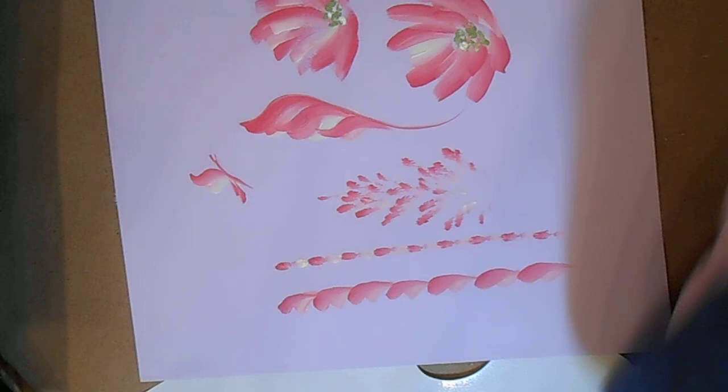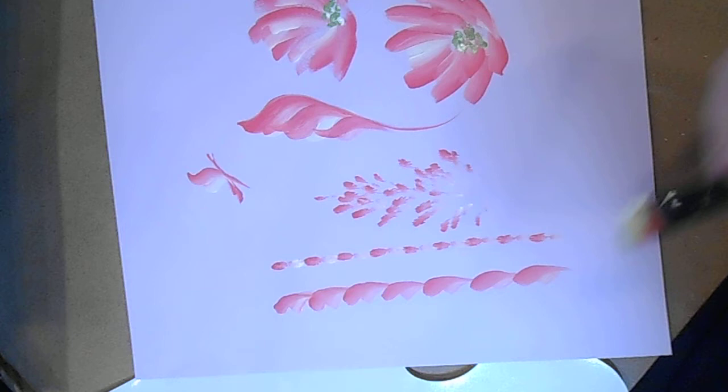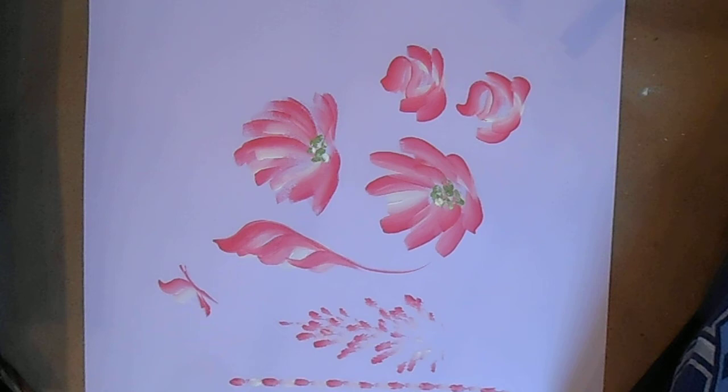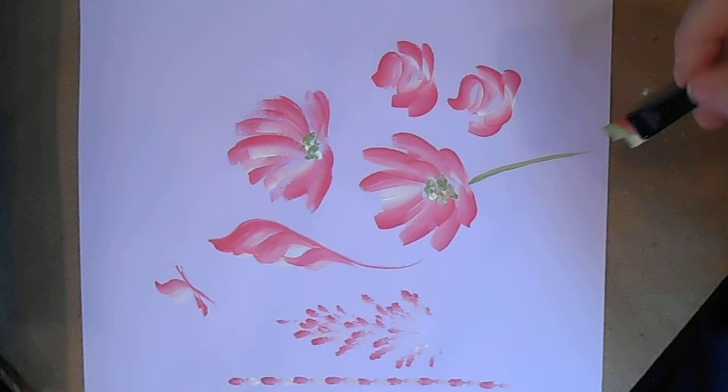And then the last thing that I'll show you is a fun and easy leaf that when using green and white, green loaded on the long end and white on the short, you can just create leaves for these fun flowers that you've just done. And stems too, just using the chisel edge of your brush. Pull that stem down.